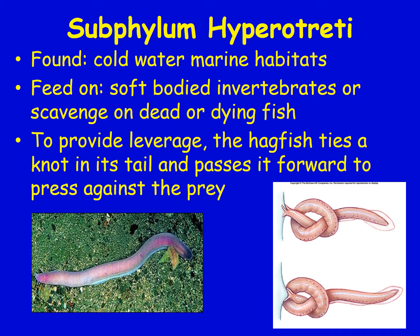Hagfish are found in cold marine habitats. They eat soft-bodied invertebrates or scavenge on dead or dying fish. To provide leverage when feeding, they actually tie themselves in a knot and push the knot forward toward their prey — their mouth grips the prey while they push back with the knot, ripping pieces of flesh off whatever they're trying to eat.